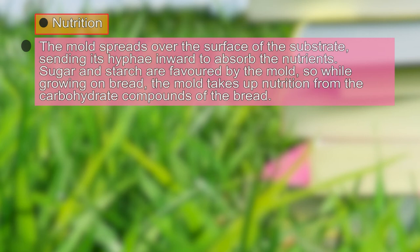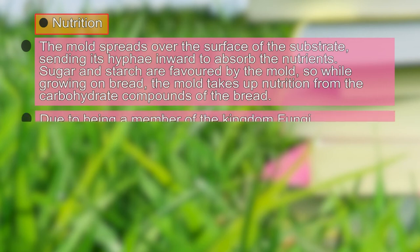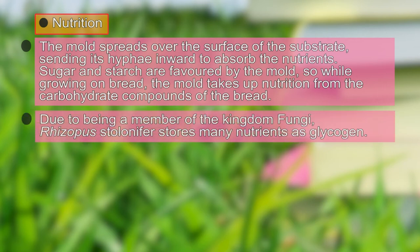While growing on bread, the mold takes up nutrition from the carbohydrate component present in the bread. Due to the presence of hyphae, Rhizopus takes food from the substratum and stores it in the form of glycogen.